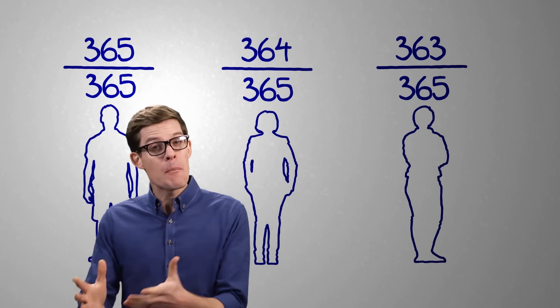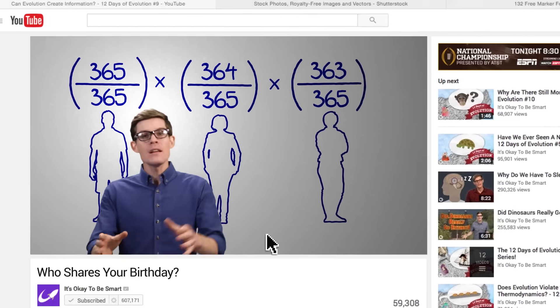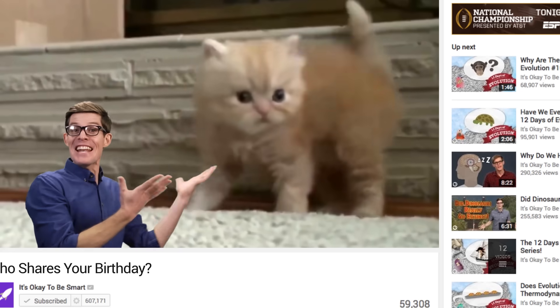When we combine the odds of independent choices together, we multiply their probabilities. Whoa, whoa, whoa, whoa! Don't run away from the math. It's not that scary. Look! A kitten!